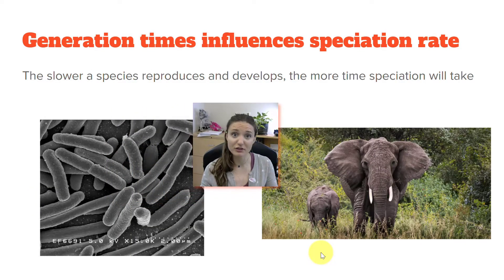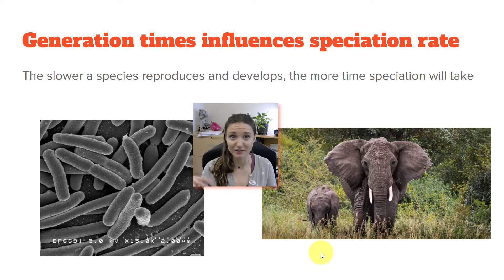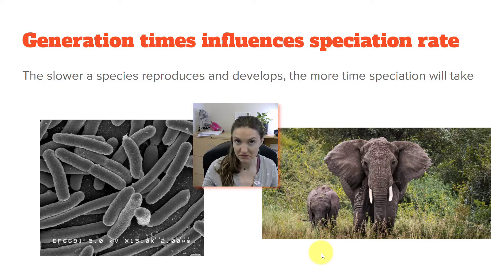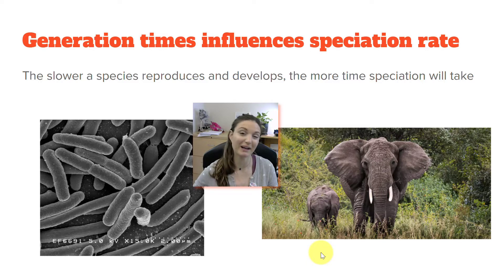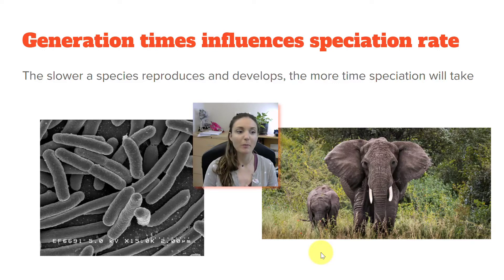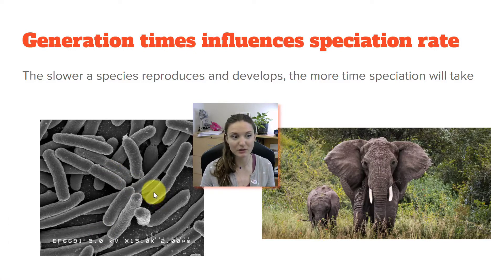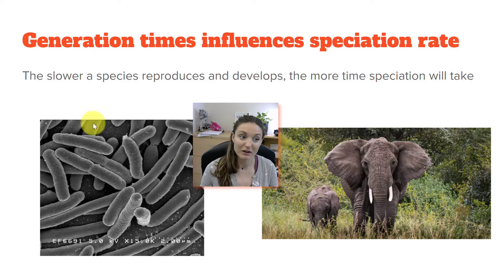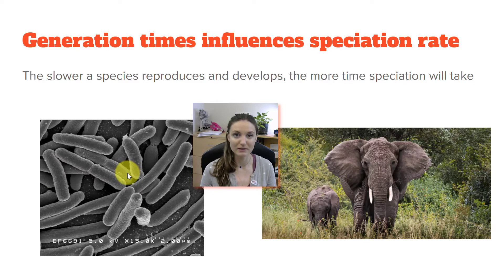Speciation is about divergence — those groups becoming different. How quickly do they reproduce? What's their generation time? The slower a species reproduces and develops — like humans, elephants, or whales — the longer the process of speciation would take, because it takes more time for natural selection and other mechanisms of evolution to act on the population to see change happen. But for something like bacteria, these guys can double in 20 minutes as opposed to almost 20 years, so we can see evolution and speciation occurring at a much faster rate in things with a shorter generation time.